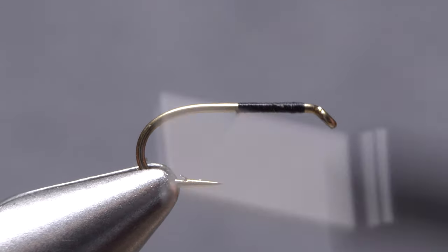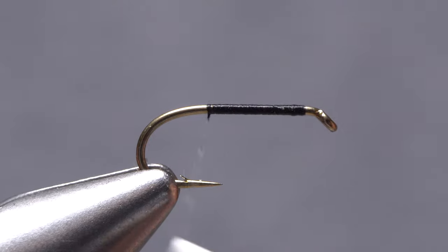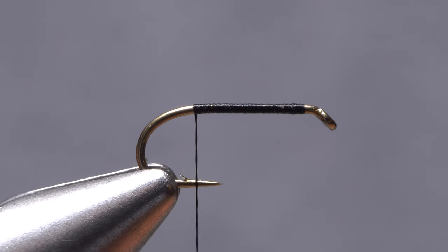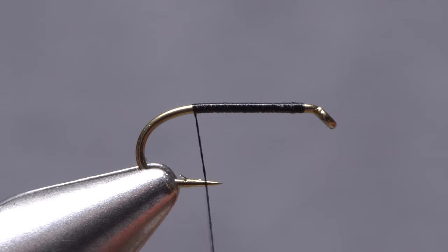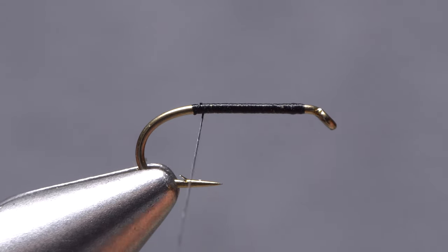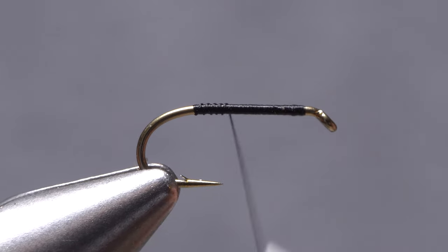Continue taking touching wraps back to the start of the hook bend then give your bobbin a clockwise spin as if you're looking down on it to cord up your tying thread. Make open spiral wraps up the hook shank with a corded thread to add some texture.